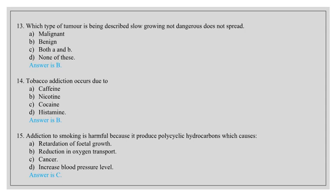Tobacco addiction occurs due to caffeine, nicotine, cocaine, histamine. Answer is B, nicotine. Addiction to smoking is harmful because it produces polycyclic hydrocarbons which causes retardation of fetal growth, reduction in oxygen transport, cancer, increased blood pressure level. Answer is C, cancer.